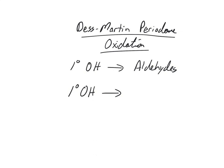We're going to talk about Dess-Martin Periodinane oxidations, DMP oxidations. We'll talk about the structure in a second, but the big overview idea is that with Dess-Martin Periodinane, you can take a primary alcohol and turn it into an aldehyde.